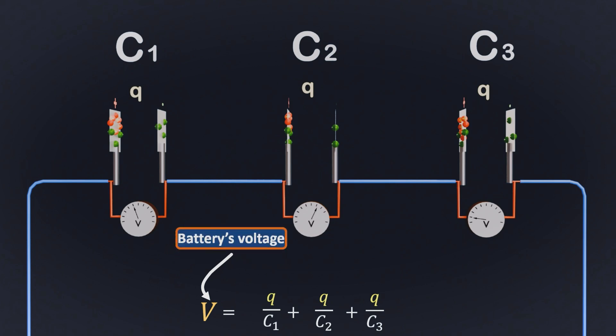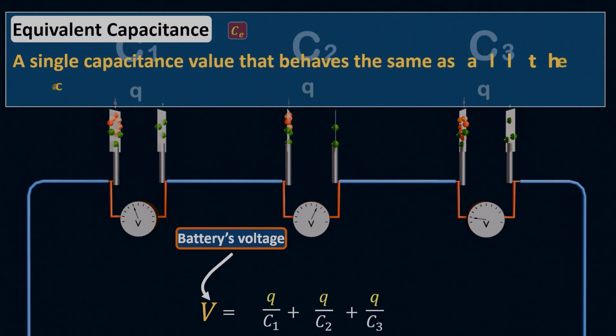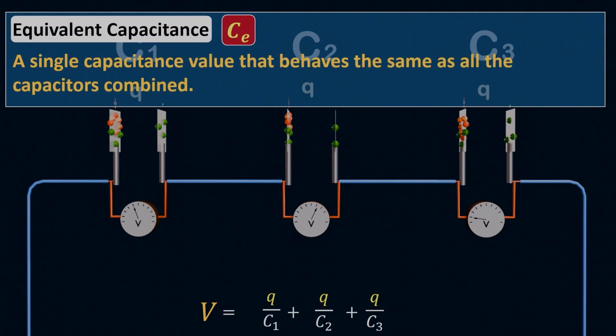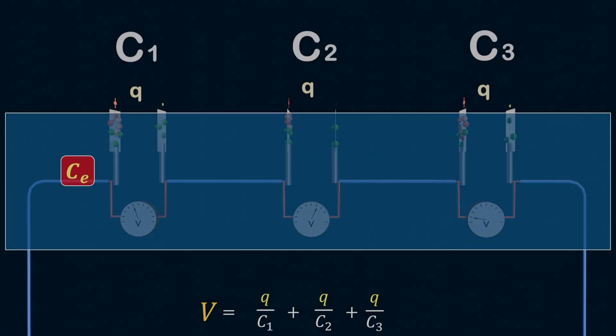When we connect capacitors in series, we want to find a single equivalent capacitance, CE, that behaves the same as all the capacitors combined. To find this equivalent capacitance, we start with the definition of capacitance, which is CE equals Q by V, that is, charge stored per unit voltage.